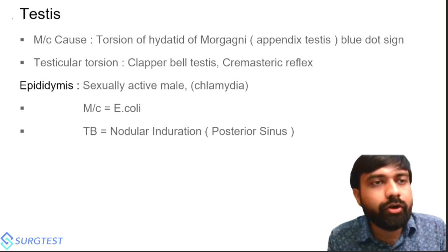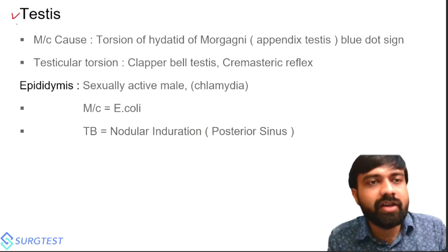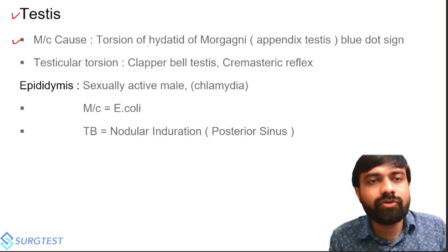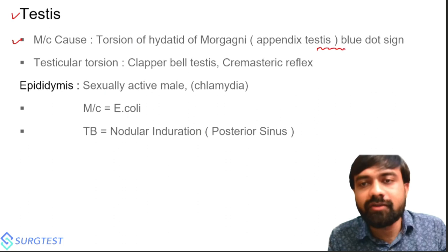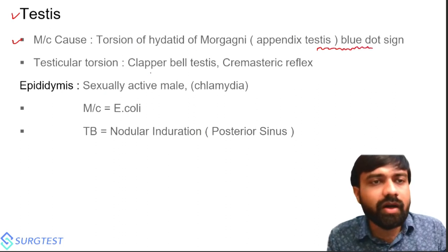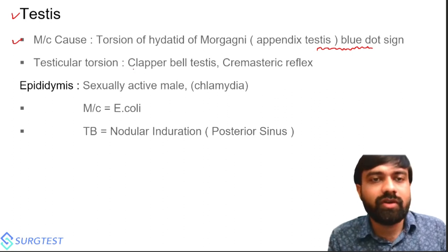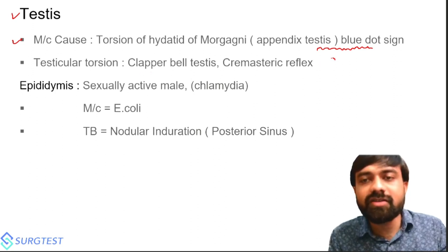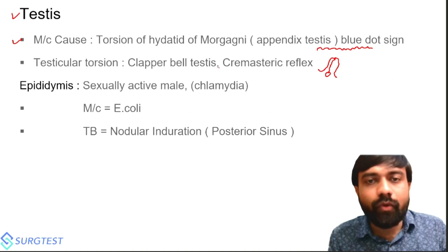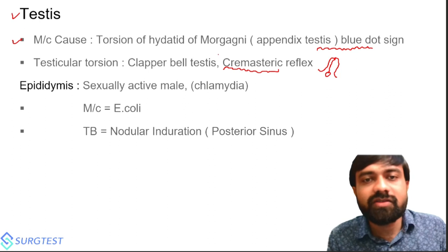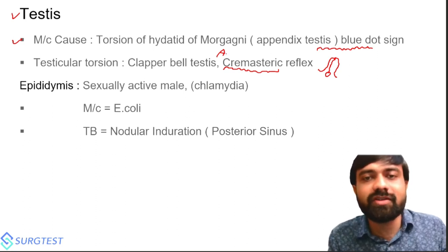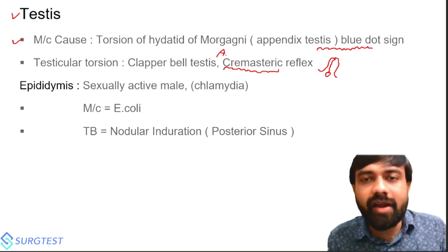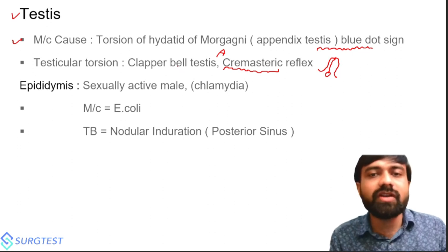Moving to specific organs — testes: the most common cause of testicular pain is torsion of the hydatid of Morgagni, not torsion of the testis. The sign seen in torsion of the hydatid of Morgagni is the blue dot sign — asked multiple times. The most common cause of actual testicular torsion is bell-clapper deformity, where the testis hangs freely and is prone to torsion. Cremasteric reflex is lost in testicular torsion but maintained in torsion of the hydatid of Morgagni — this distinction is asked in NEET SS super-specialty exams.